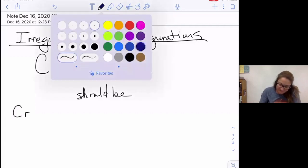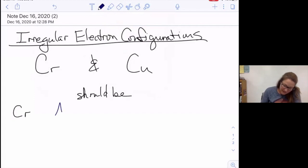So for example, chromium, I'm going to use the noble gas shortcut, is argon 4s2 3d4, you would think.